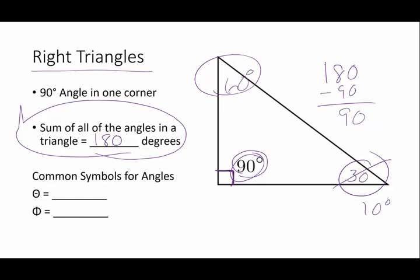Common symbols we use for angles are theta, and theta kind of looks like the planet Saturn, and phi, Greek letter phi, and it said phi phi fo fum like the blood of an Englishman from the old nursery rhyme.